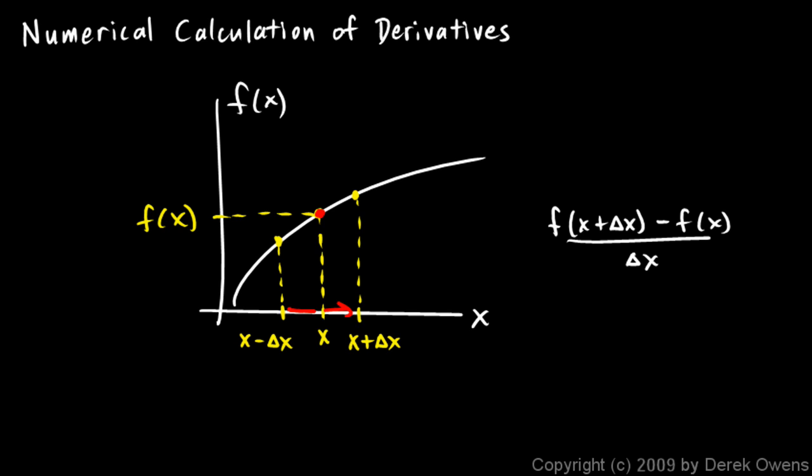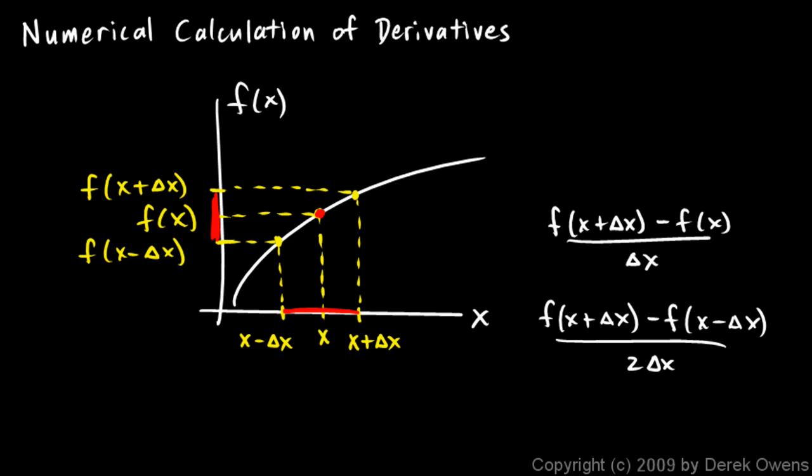We go forward a certain amount and backward a certain amount, and we get two corresponding y values to these x values. And we can name these. This is f of x plus delta x and f of x minus delta x. And then the slope calculation would be this. It would simply be the rise over the run. And so the rise would be f of x plus delta x minus f of x minus delta x over 2 delta x. And this is what the calculator does.